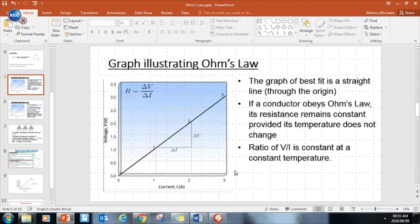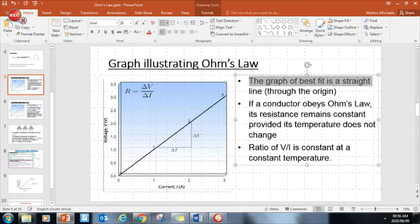Now we have a graph, you can potentially receive a graph like this in your exams, and you have to understand what's going on. So over here, we have voltage on the y axis, current on the x axis, and we have a straight line, a graph that's a straight line going through the origin. In other words, it cuts at zero, zero. So here it says the graph of best fit is a straight line through the origin, that's important.